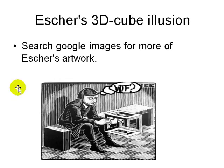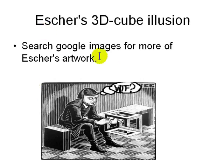There are also 3D illusions — drawings by Escher, an artist and mathematician who made many woodcuts like these, which you can find on Google Images. One example shows a cube where it's confusing what is inside and what is outside — it's unclear whether it's going inward or outward.